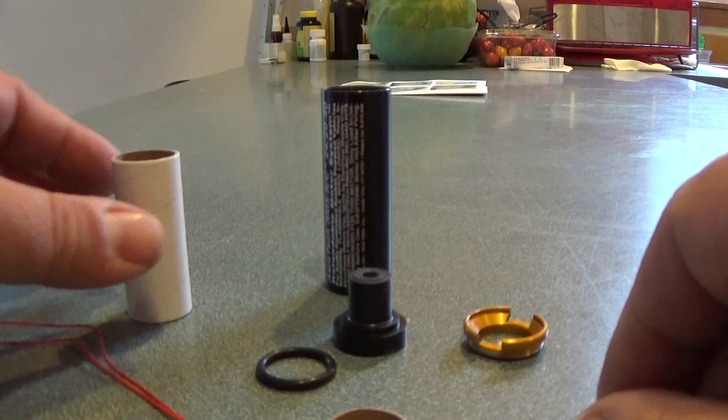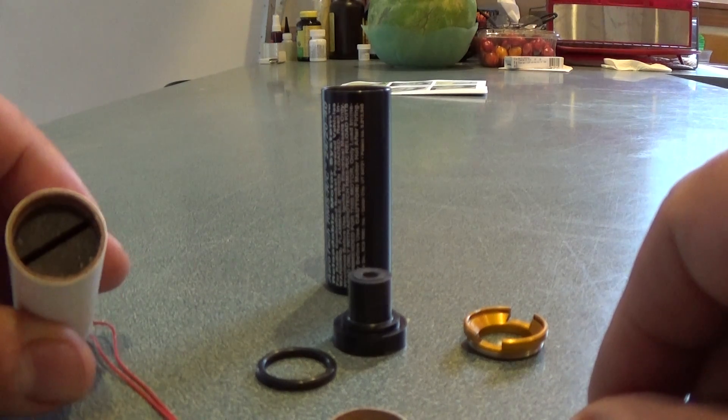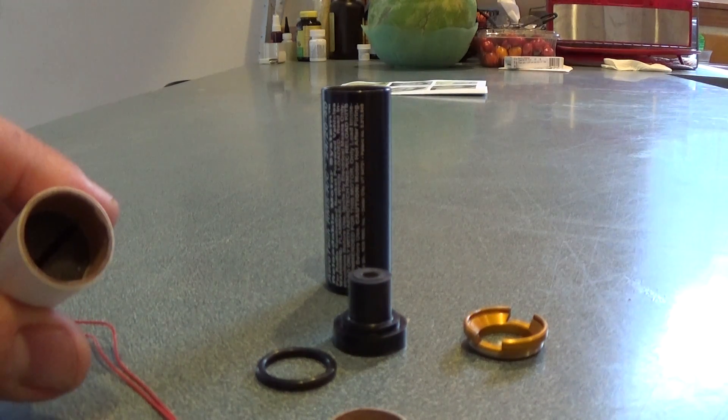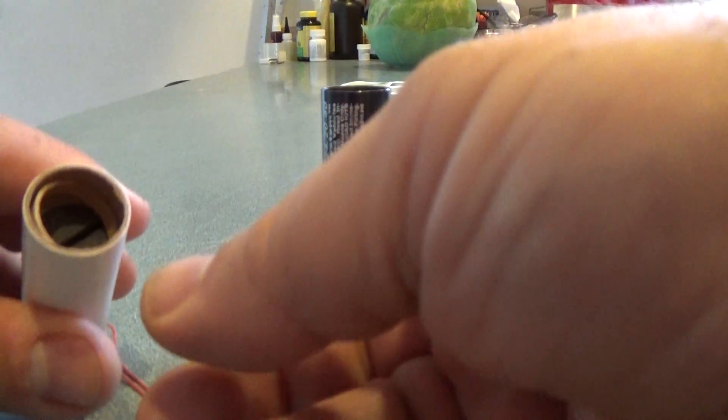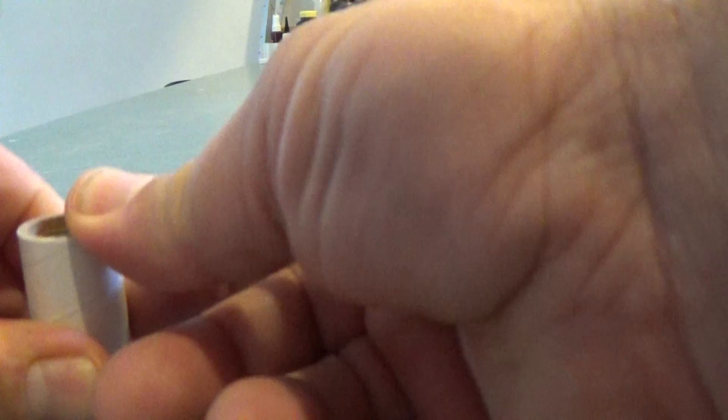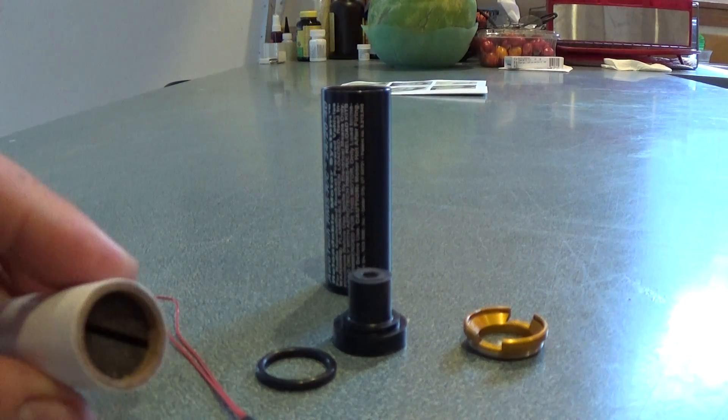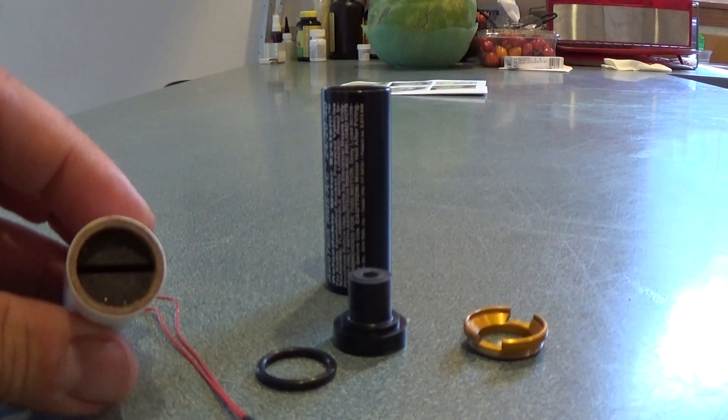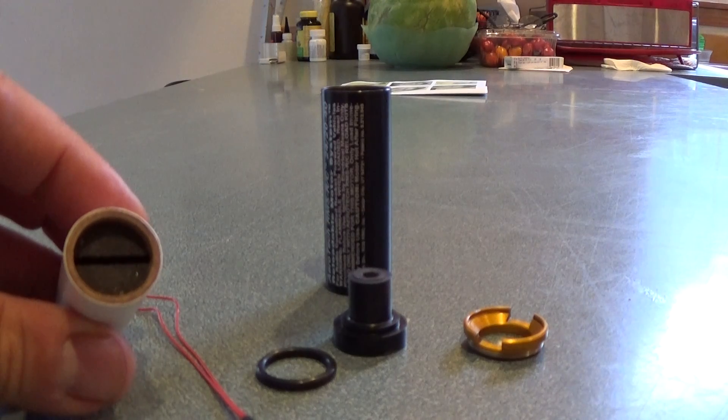So the first thing I do is I take the propellant and the end that has the slot, I'm going to poke that down a little bit so that it has some room in there. And then I'm going to insert the little spacer ring into the end with the slot. And then I'm going to push it back down so that the spacer ring is now flush with the end. So you want the spacer ring on the end with the slot.